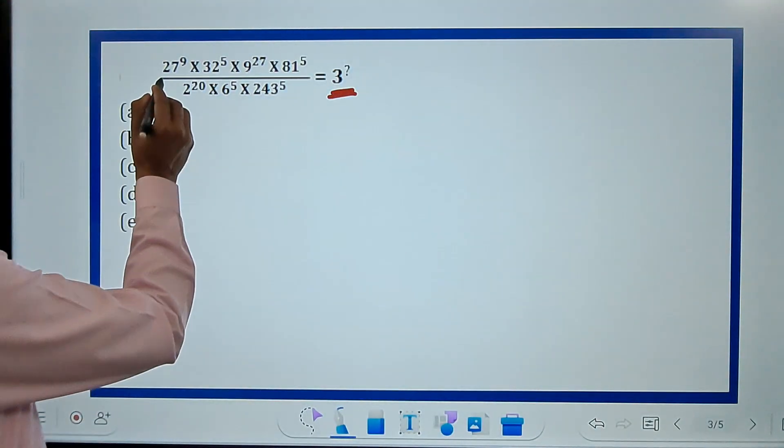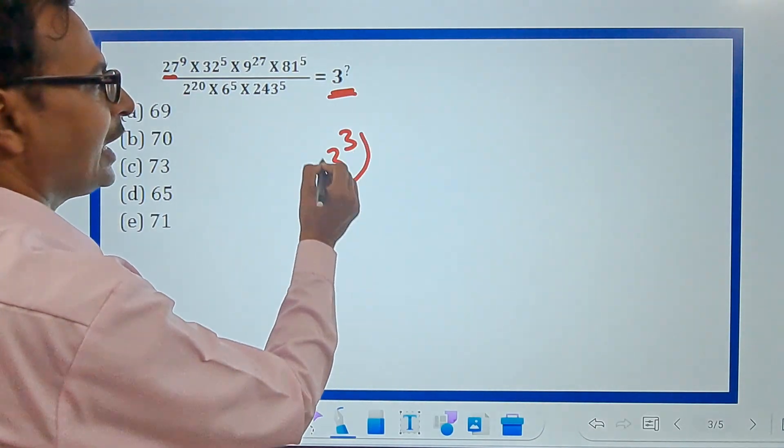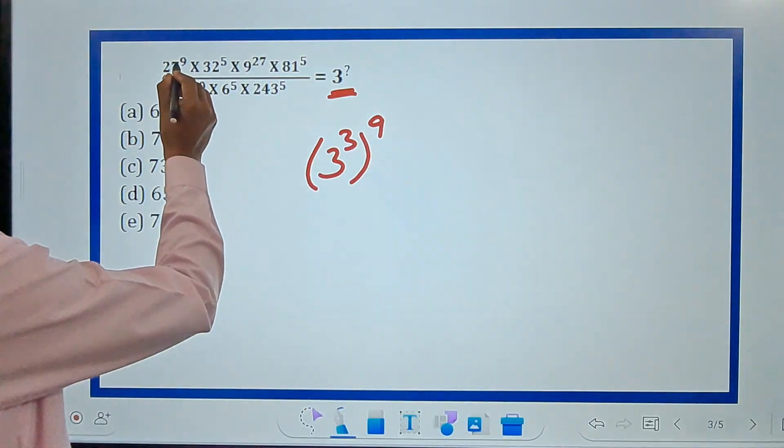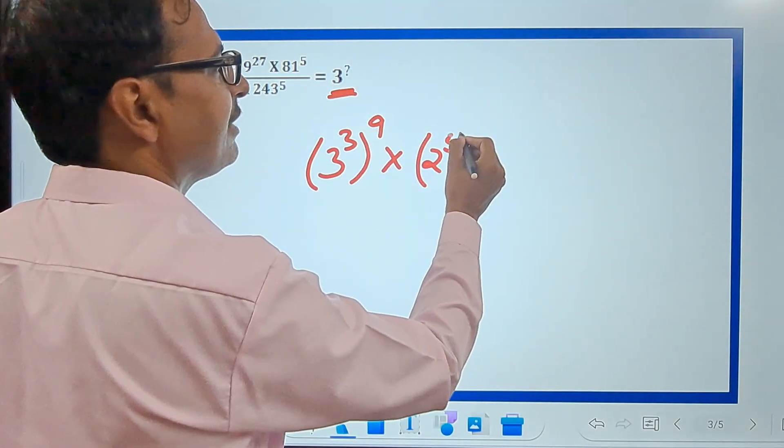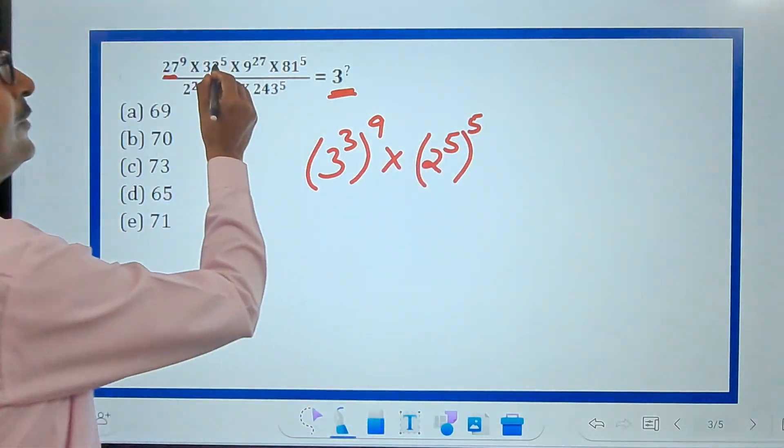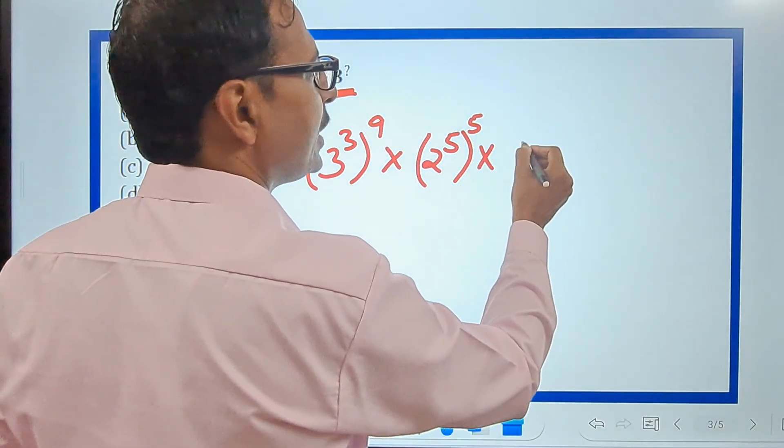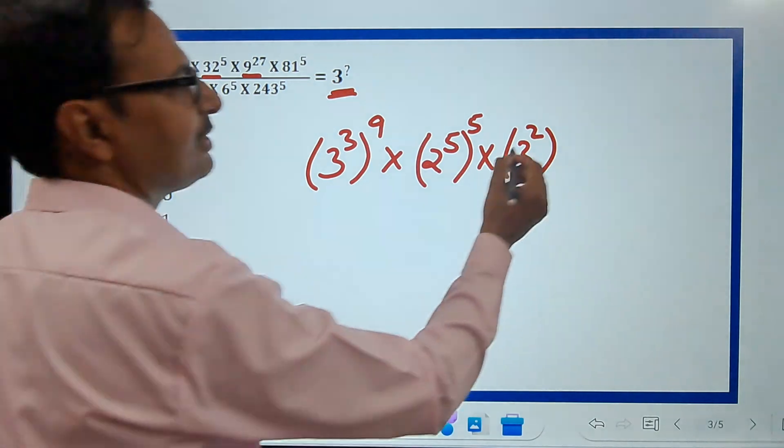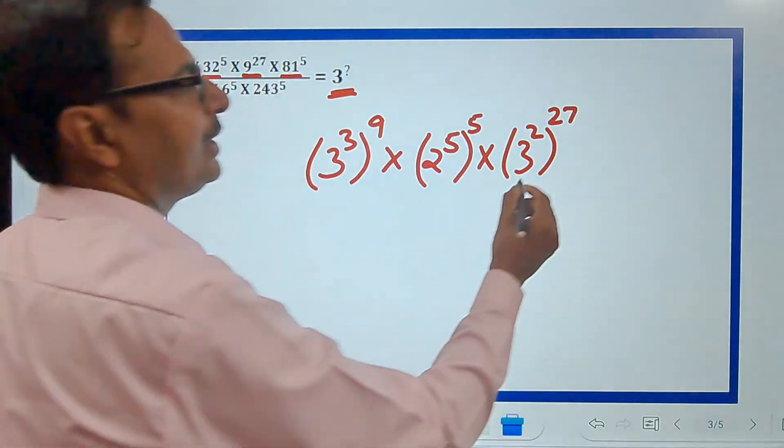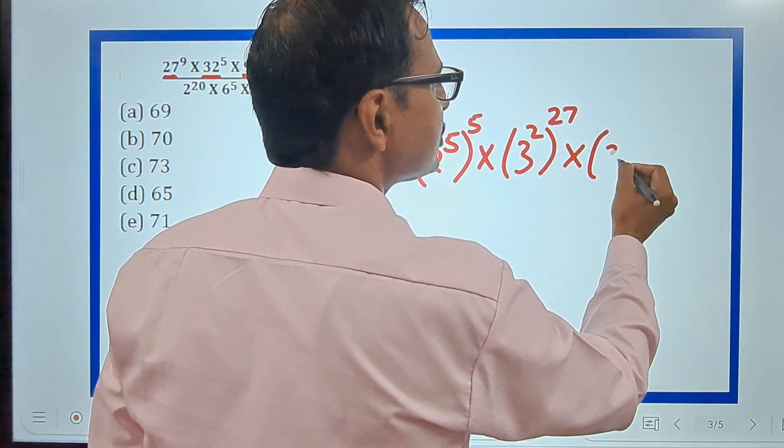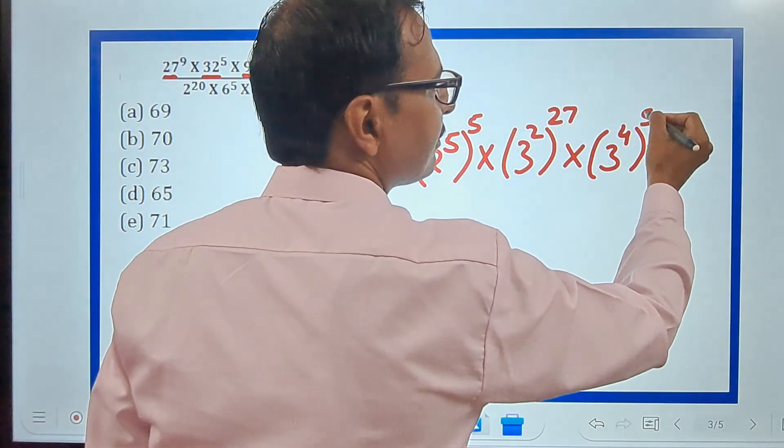First, I'm going to resolve 27. 27 is 3 cubed and we have power 9 here, times 32 is 2 raised to power 5 and we have power 5 also here. 9 is 3 squared with power 27. Now 81—if you know—is 9 squared or 3 raised to power 4, and then we have power 5 here.